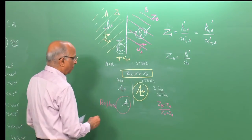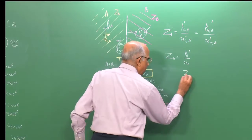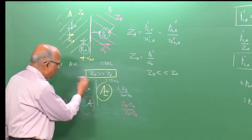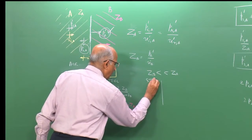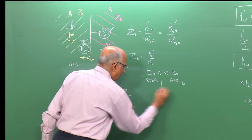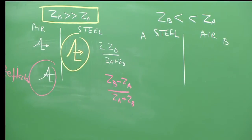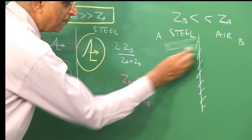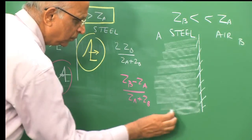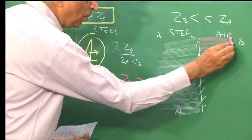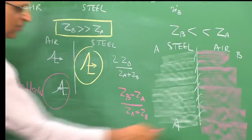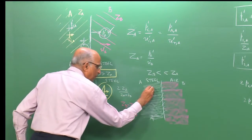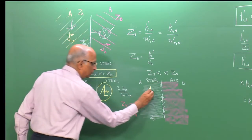Now let us take the other example: Z_b less than Z_a — the second medium has lower impedance. Let us consider the reverse: medium A is steel and medium B is air. A shock wave is coming toward the interface. In this case the impedance of the second medium is much lower.